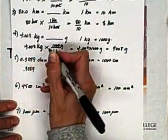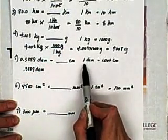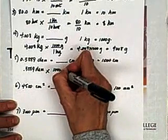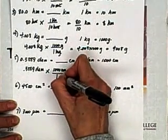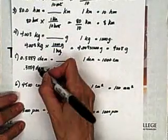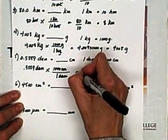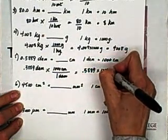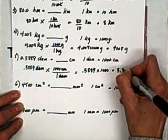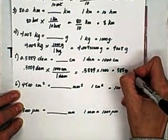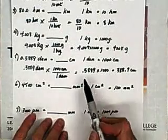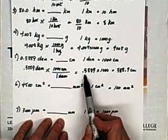0.3889 decameters converted to centimeters. 1 decameter is equal to 1,000 centimeters. So we will multiply by 1,000 centimeters is equal to 1 decameter. Cancel the common units, and we now have 0.3889 times 1,000, or 388.9 centimeters. We need to move the decimal three places to the right to multiply by 1,000.